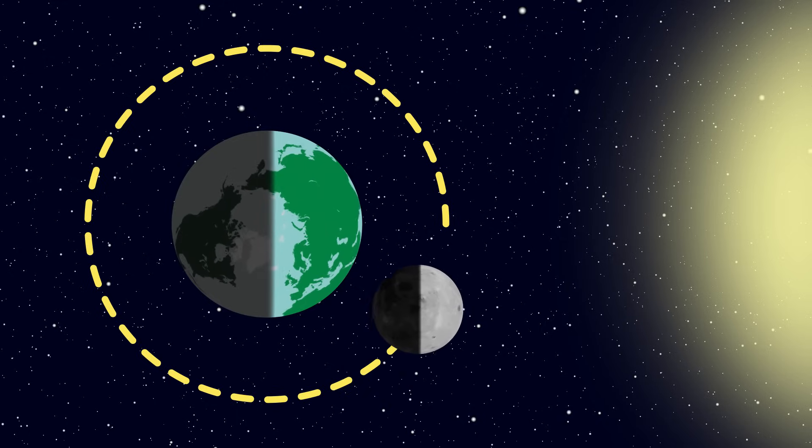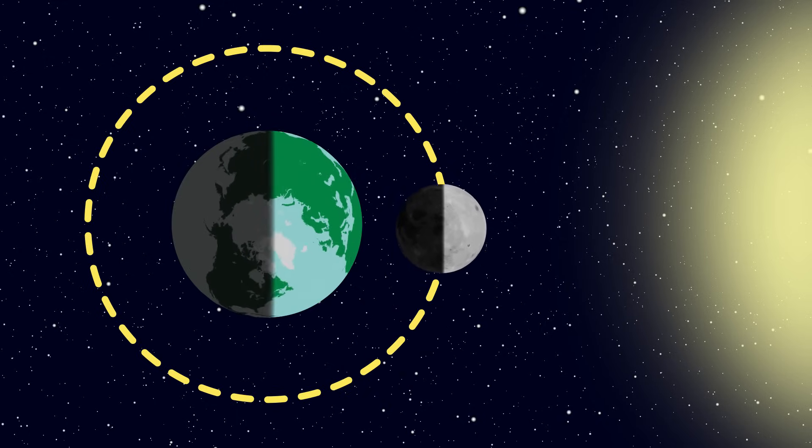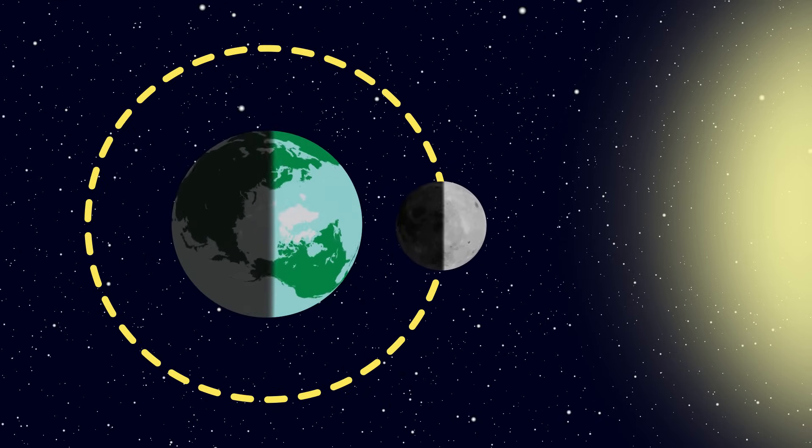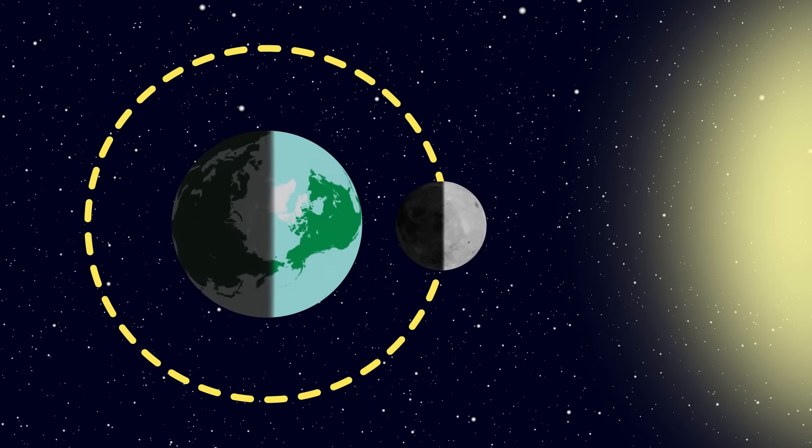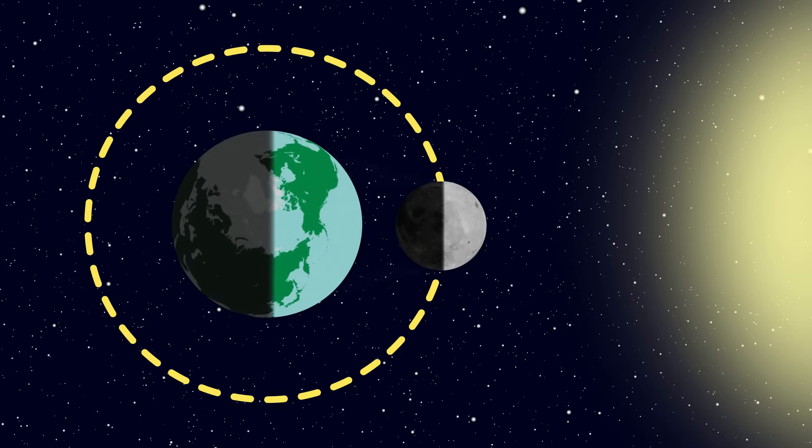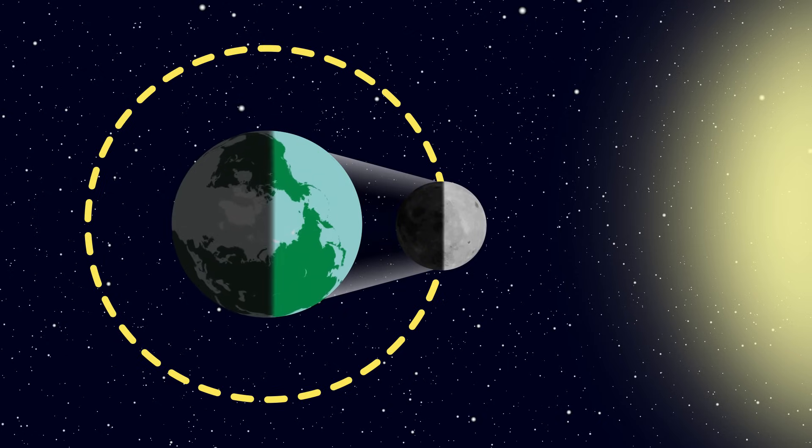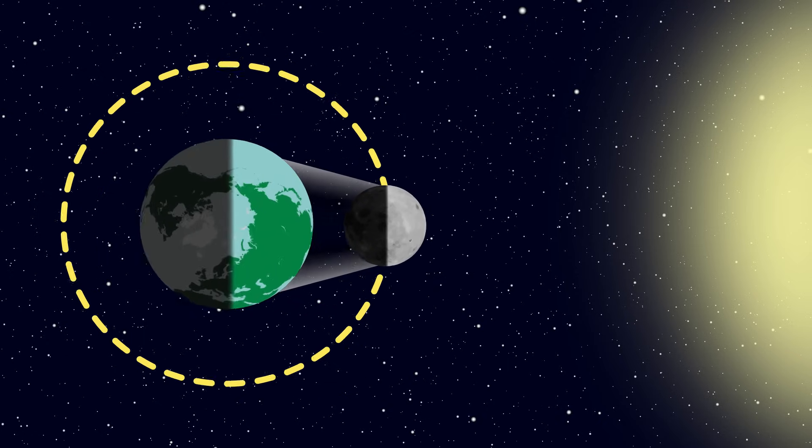Finally, after 29.5 days or about a month, the moon has now traveled all the way around the Earth and has arrived back where it started, sandwiched between the Earth and the Sun at the new moon. The cycle of phases is complete.